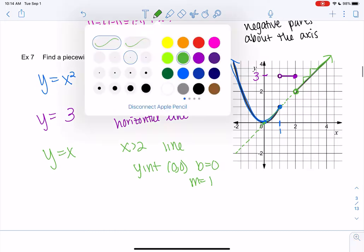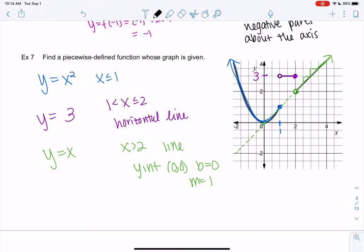And let's just go ahead and write it as a piecewise function now. So f of x, we have 3 pieces. So we're going to use that little brace thing. x squared if x is less than or equal to 1. 3 if x is in between 1 and 2. 2 is included. And then x if x is bigger than 2.